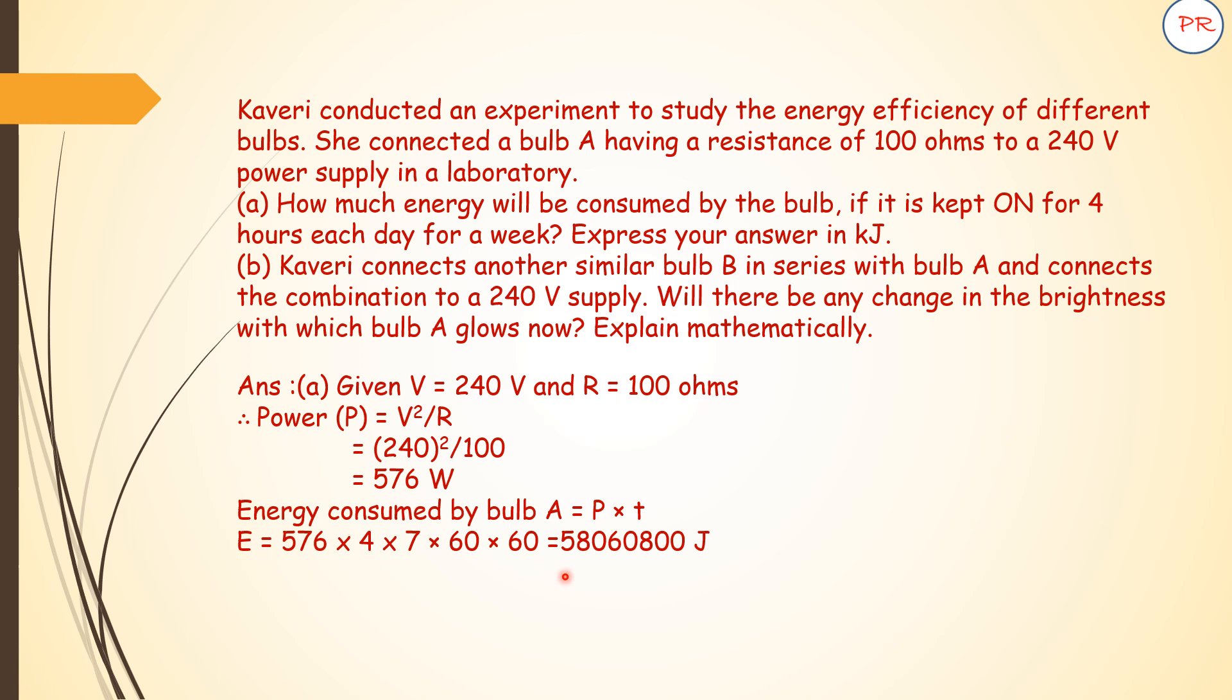So this huge value comes out to be 58060800 joules. Remember, power's unit is watt and energy consumed's unit should be joules. Now they have asked to express your answer in kilojoules, so we have to divide it by 1000. So after dividing by 1000, I will get the answer as 58060.8 kilojoules.